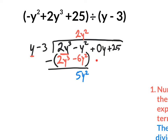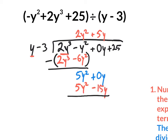Bring down the next term, plus 0y. Y times what will give me exactly 5y squared? Y times 5y gives me that exact 5y squared. Distribute: 5y times negative 3 gives negative 15y. We are subtracting with parentheses and the minus sign, making it a positive 15y. But when you add 0y, it's still positive 15y. Over here, the minus 5y squared cancels with the positive 5y squared.